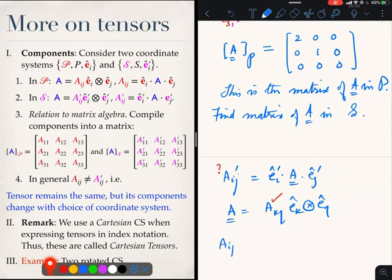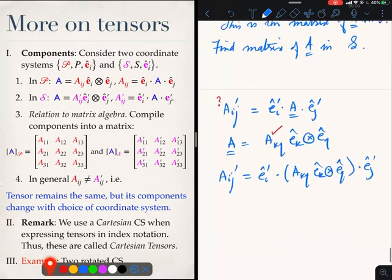What we will do is that we will take this and substitute in there. Then we will get aij prime will be Ei prime dot AkL Ek tensor EL dot Ej prime.